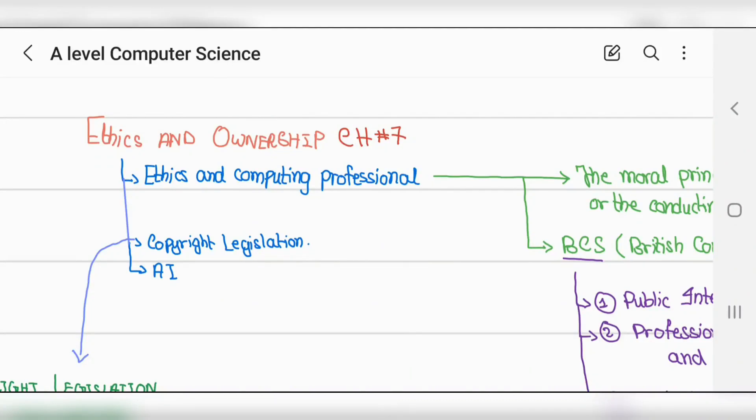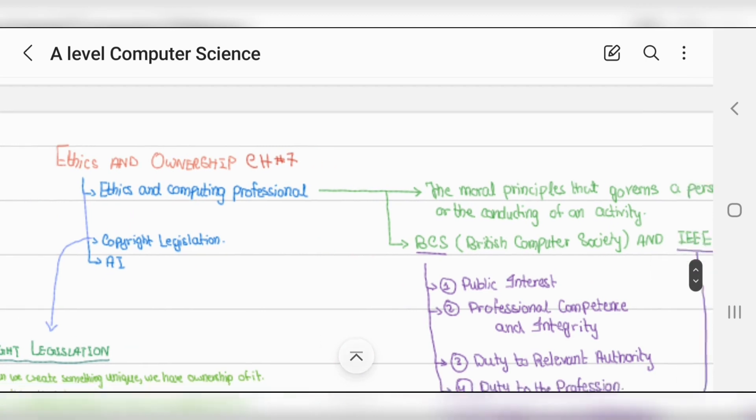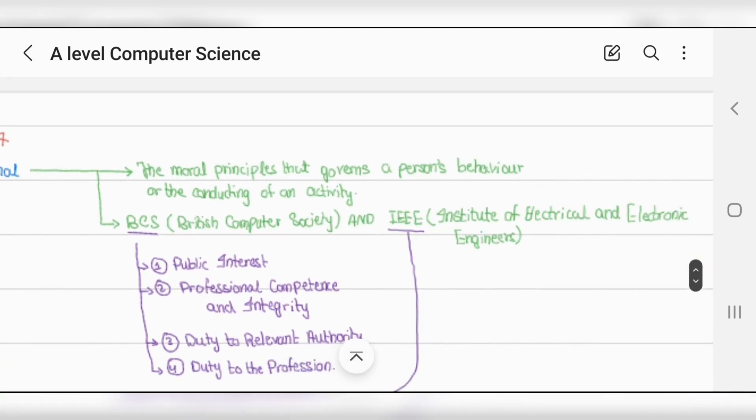Welcome back, this is A-Level Computer Science 9618, Chapter 7: Ethics and Ownership. Let's start with ethics and computing. Professional ethics means right and wrong - the moral standards that each person needs to commit to as a software engineer or any other profession. You need to act ethically, according to rules and regulations beneficial to society and yourself.